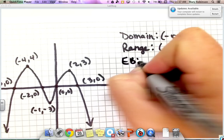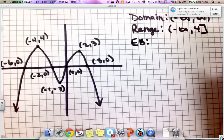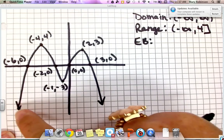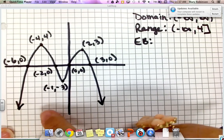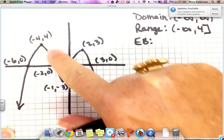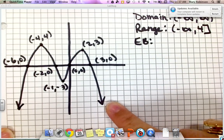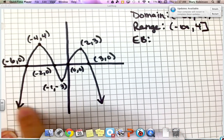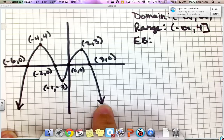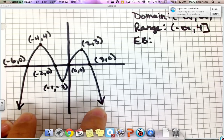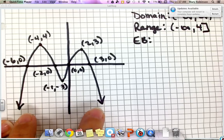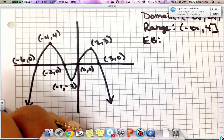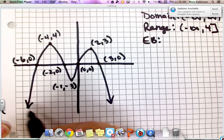Let's state our end behavior. When both ends go down or both ends go up, we know it's an even-degree polynomial. We can trace the turning points — 1, 2, 3, 4 — so it's at least a fourth-degree polynomial. Assuming this is a fourth-degree (even) polynomial, we can see both ends go down, which tells us we have an even-degree function with a negative leading coefficient.